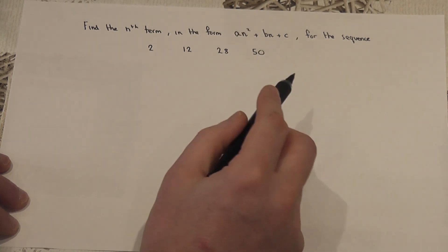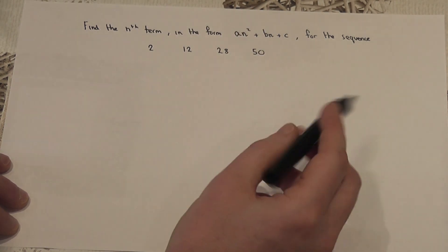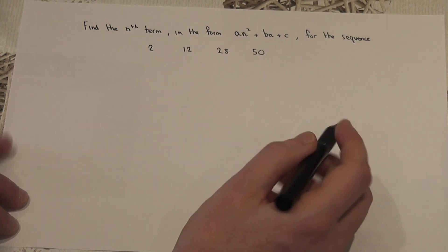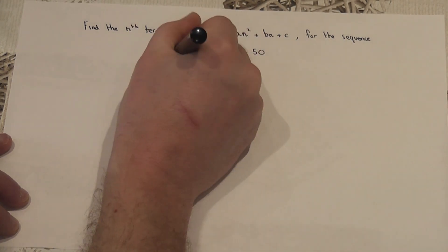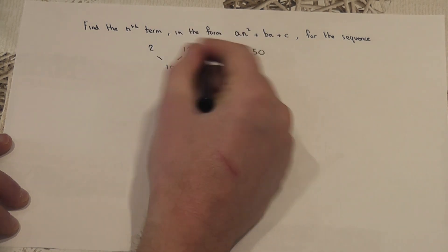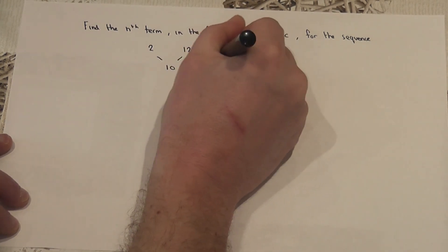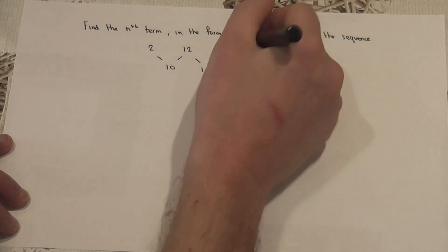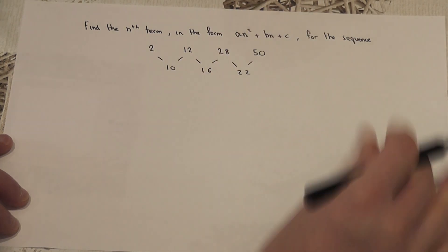When you've got a sequence, the first skill is to always find the common difference. 12 take away 2 is 10, 28 take away 12 is 16, and 50 take away 28 is 22.